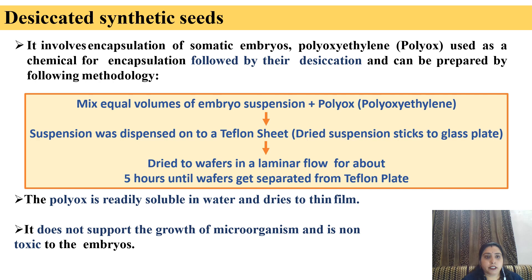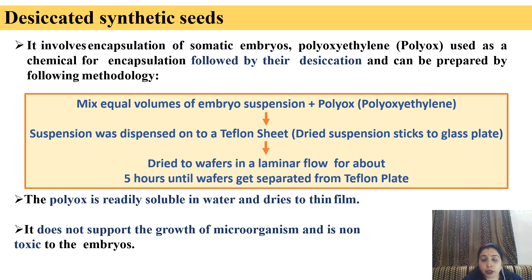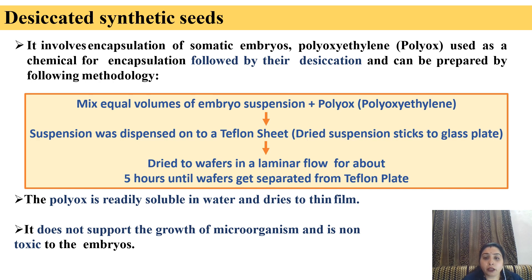Desiccated synthetic seeds: It involves encapsulation of somatic embryos. Polyoxyethylene, or polyox, is used as a chemical for encapsulation followed by their desiccation. It can be prepared by the following method: mix equal volumes of embryo suspension with polyox. This suspension is dispensed on a teflon sheet and dried to wafers in a laminar flow for about 5 hours until it gets separated from the teflon plate. The polyox is readily soluble in water and dries to a thin film. It does not support the growth of microorganisms and is non-toxic to the embryos.